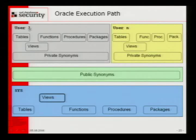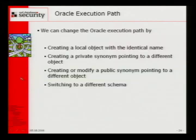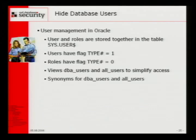From top to bottom: Oracle looks first for the object itself, then for a private synonym, then for a public synonym. We can modify objects, change the execution path by creating a local object with the same name, create a private synonym pointing to a different object, create or modify a public synonym, or switch to a different schema with alter session set current schema. User management in Oracle is simple: we have users and roles, both stored in the table sys.user$. Users have type flag 1 and roles have type flag 0. Oracle provides two views, DBA_USERS and ALL_USERS, with public synonyms.